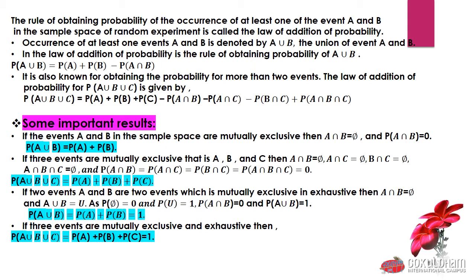Based on this, there are some important results to note. If events A and B in the sample space are mutually exclusive — we have read about mutually exclusive events — if two events A and B are mutually exclusive, then their intersection should be φ (empty set), meaning A∩B = φ, so P(A∩B) = 0. Substituting into the law of addition formula, P(A∪B) = P(A) + P(B).